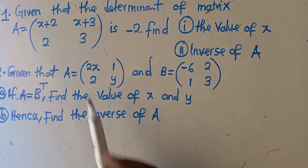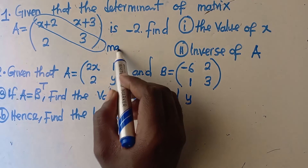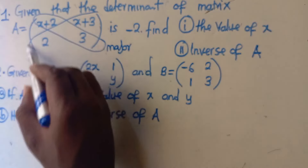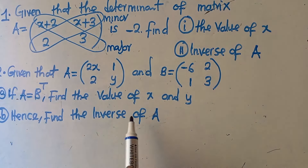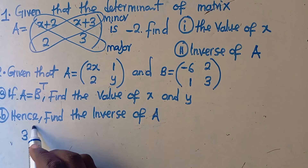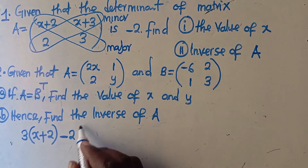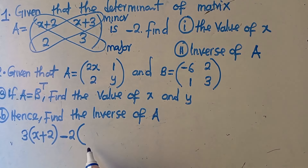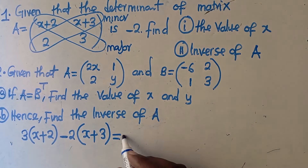How do we answer the first question? This diagonal here is called the major diagonal, and this one here is the minor diagonal. To find the value of x, we multiply what is in the major diagonal — we have 3 and (x + 2) — then minus the minor diagonal product, which gives us 2 times (x + 3), and this equals the determinant, which is negative 2.